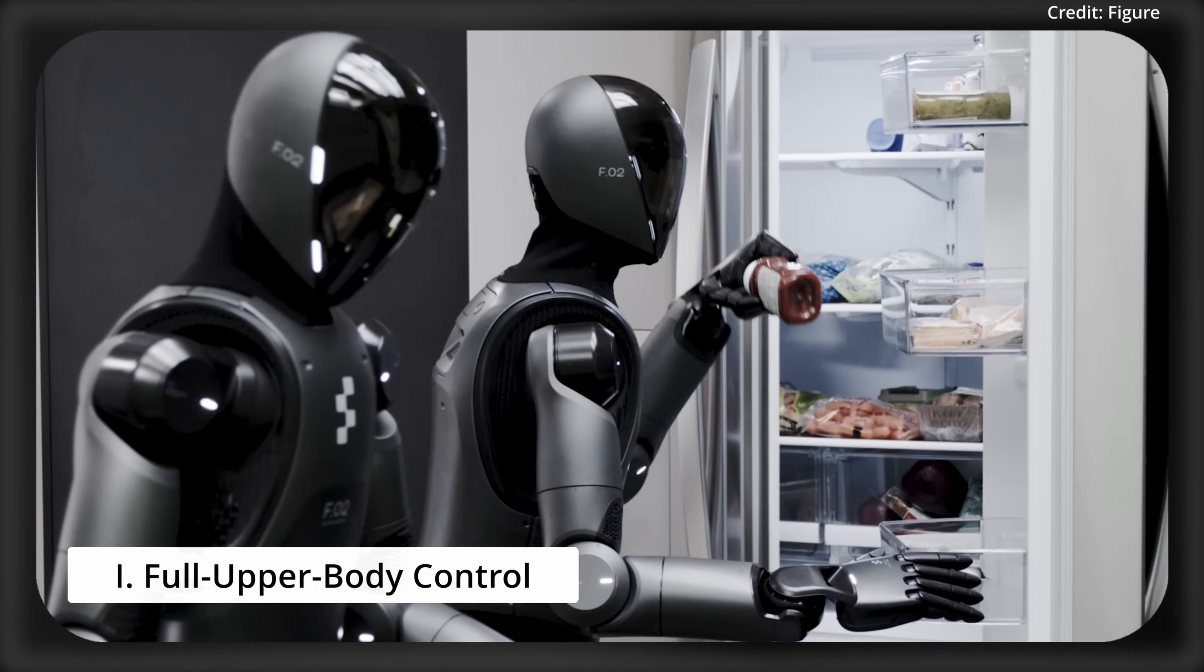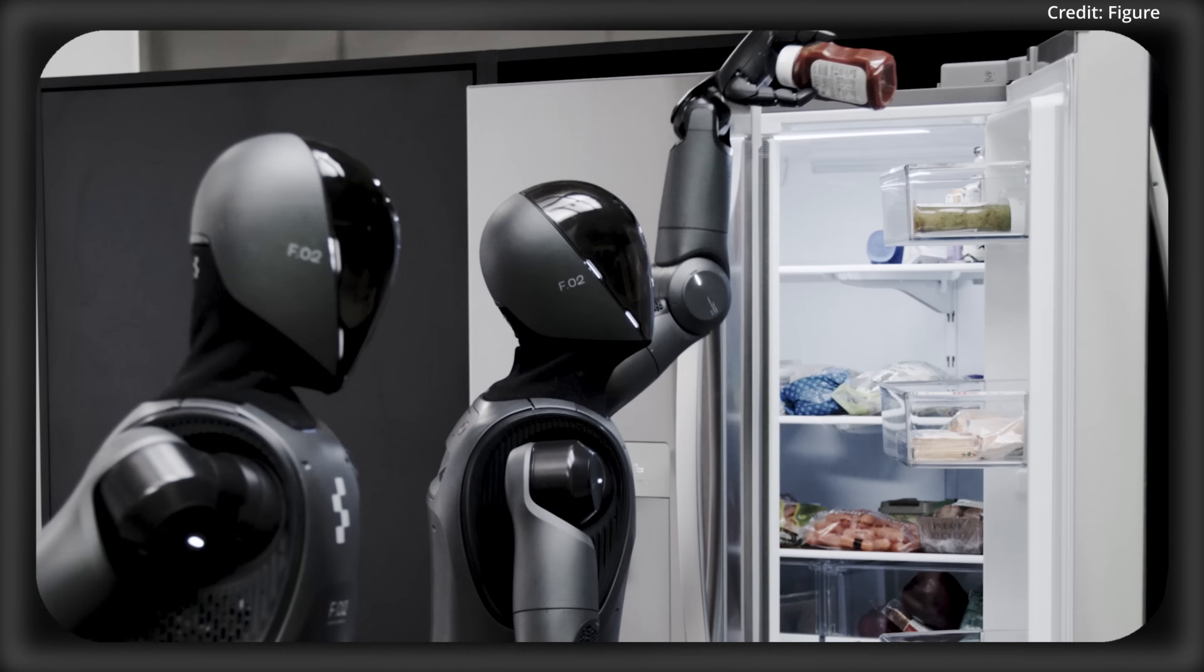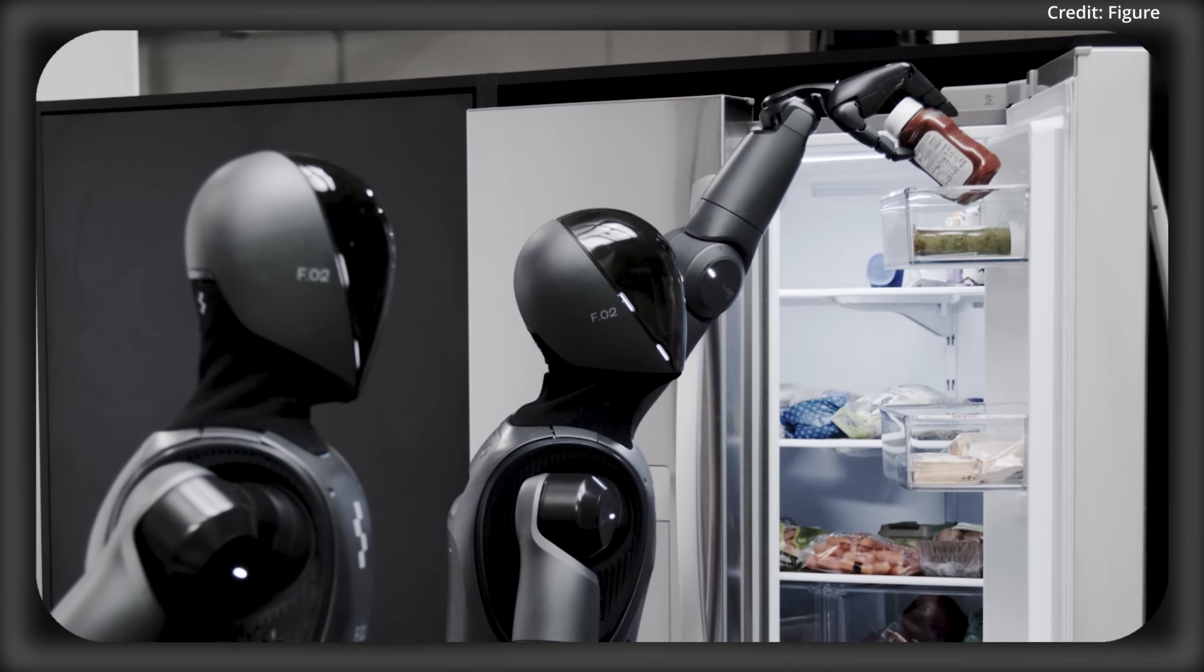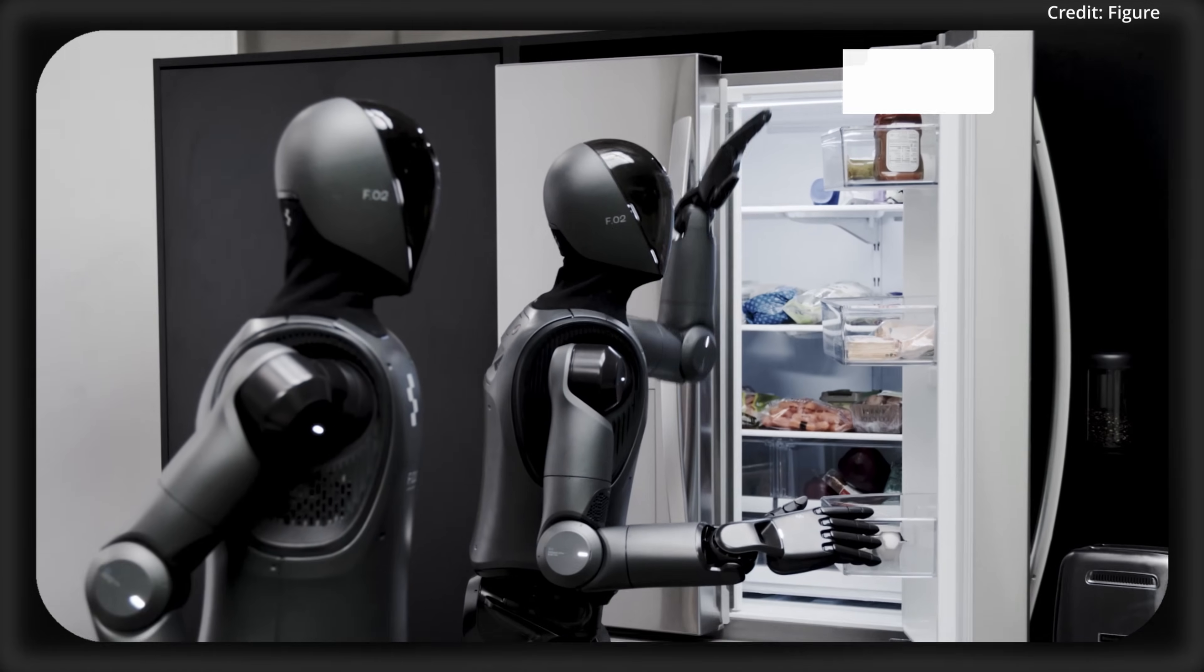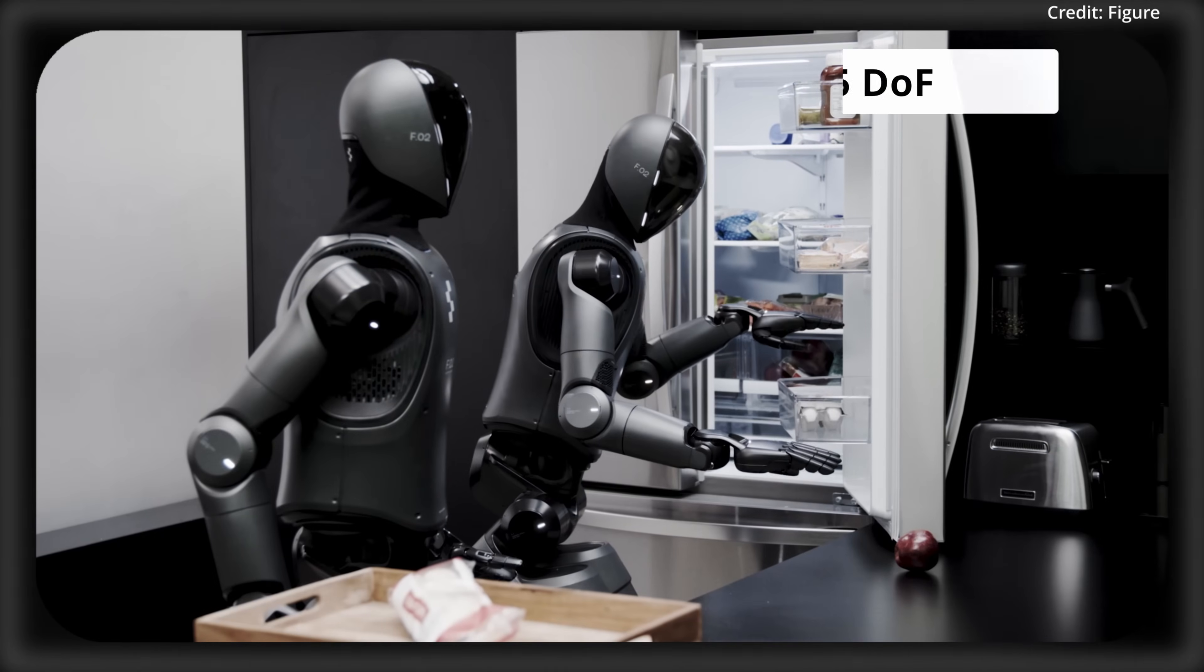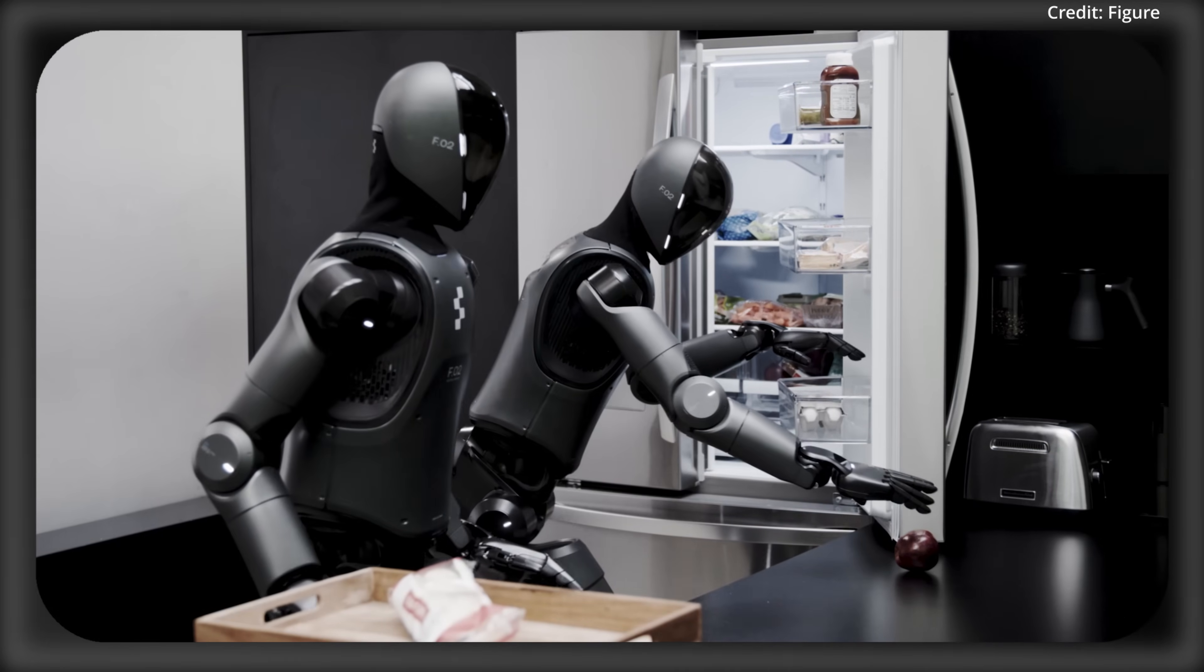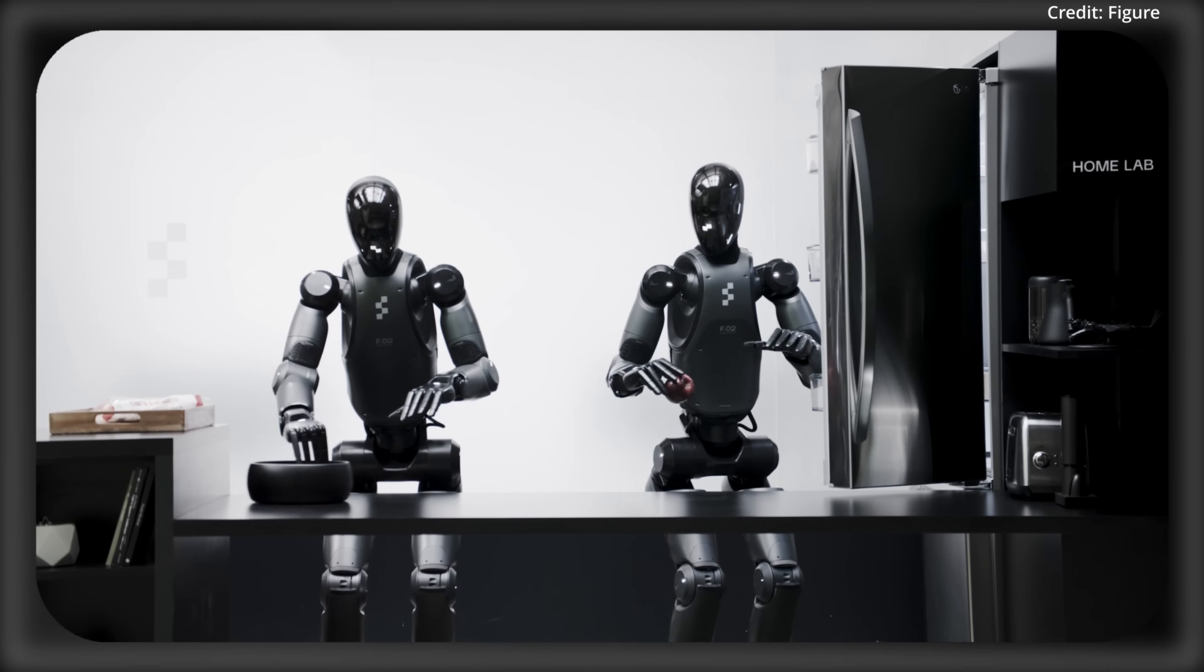Number one: Full Upper Body Control. Helix sets a new bar as the first VLA to orchestrate a humanoid's entire upper body at 200 Hz, managing a 35 degree of freedom action space. From wrist twists to finger flexes, torso shifts to head tilts, it handles it all with precision.